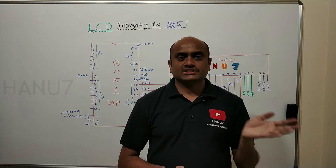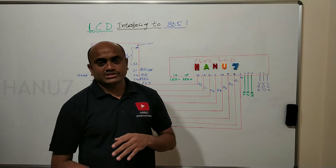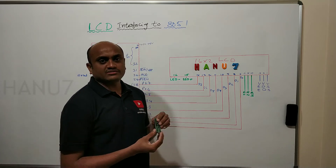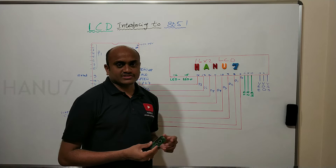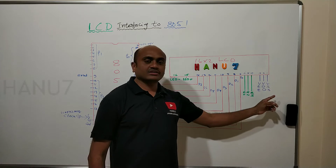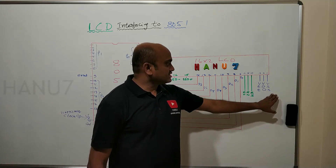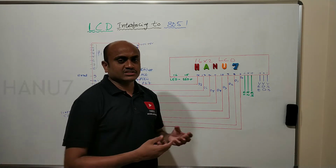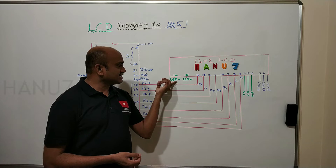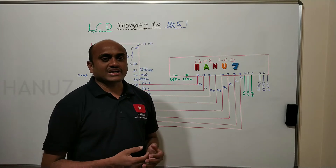Now let us see what pins are available on the LCD. This LCD has pins from pin number 1 to pin number 15. Among these 15 pins, the first three pins are VSS, VDD, and VAA — these are the supply/power pins for the LCD. There are also two more pins, LED anode and LED cathode (pins 15 and 16), which control the backlight.